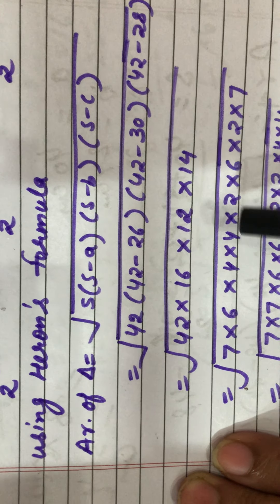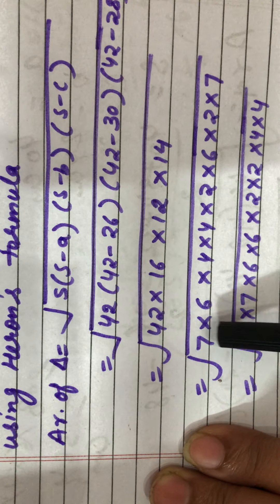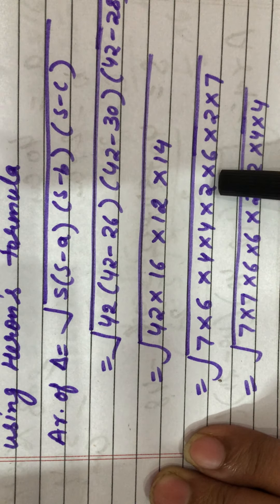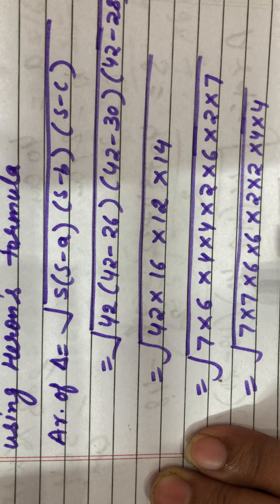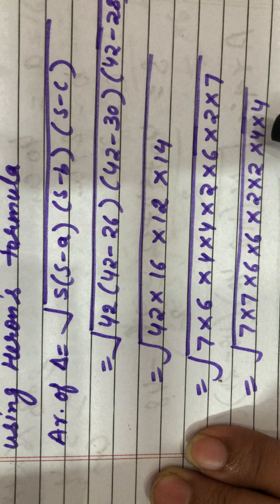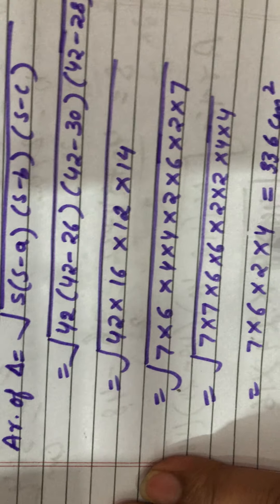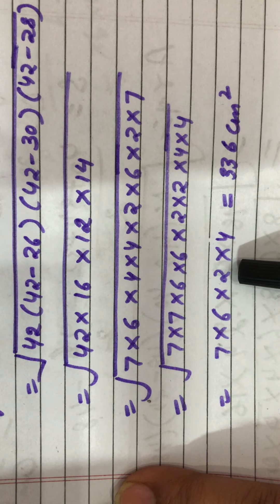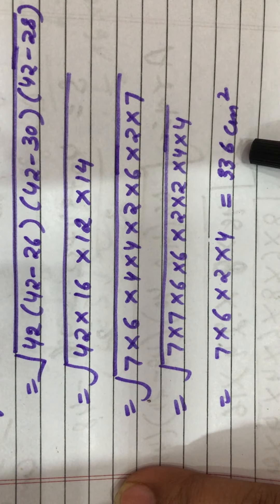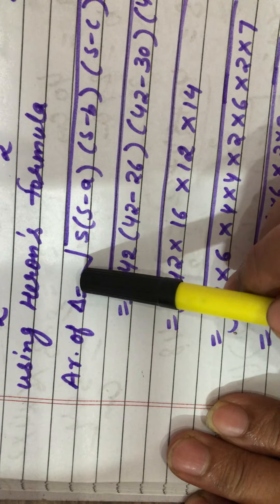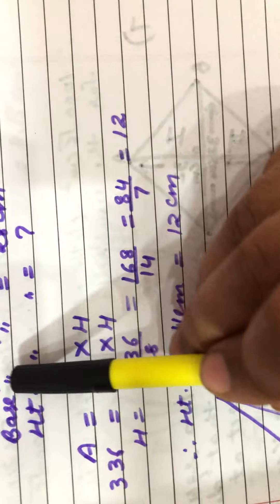We get 42 × 16 × 12 × 14. Making factors: 42 = 7 × 6, 16 = 4 × 4, 12 = 2 × 6, 14 = 2 × 7. After making pairs and finding the square root, we take out: 7 × 6 × 2 × 4, which equals 336 cm². So 336 cm² is the area of the triangle.